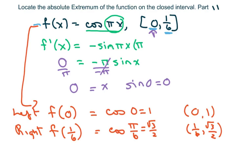Now our bigger number is the one, so that's going to be your maximum extremum, and your smaller number is square root of three over two. So that's going to be your minimum.